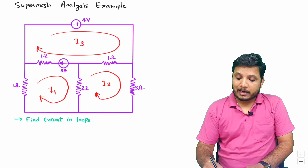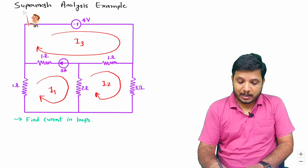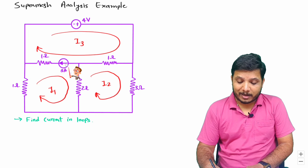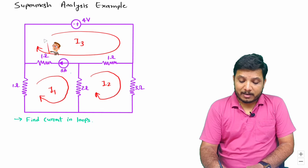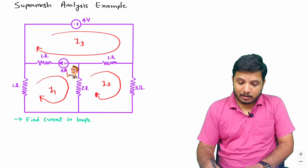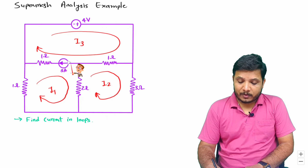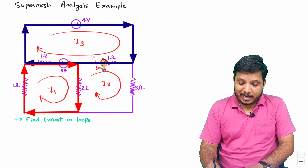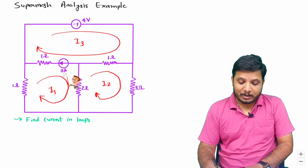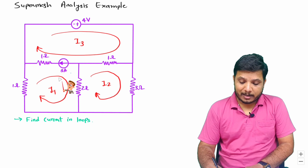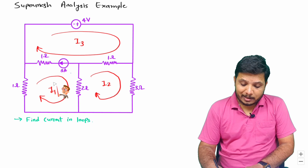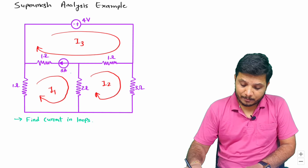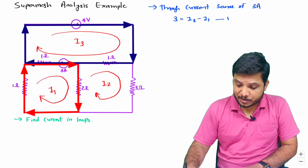In the given loops, we need to look for a current source in super mesh analysis. Whenever a current source is present in the circuit, we will be applying super mesh analysis. Through this three ampere current source, current I3 is in the direction of the current source and current I1 is in the opposite direction. So based on that I can say that three amperes equals I3 minus I1. This is equation one.